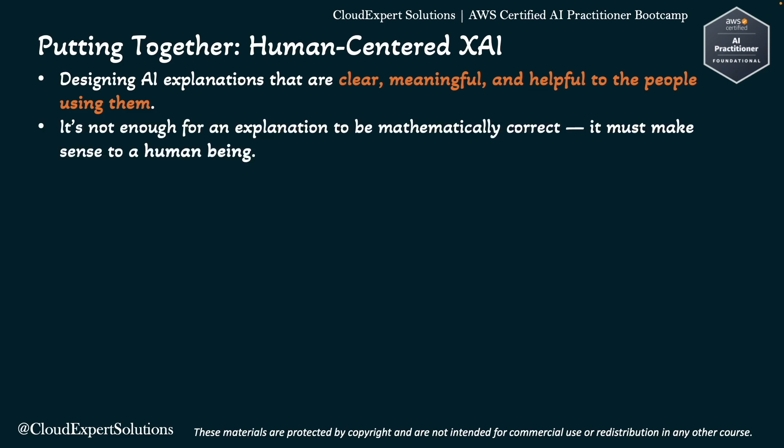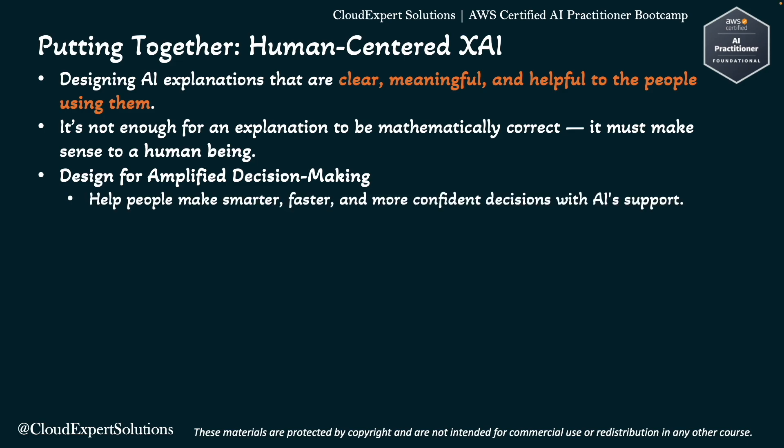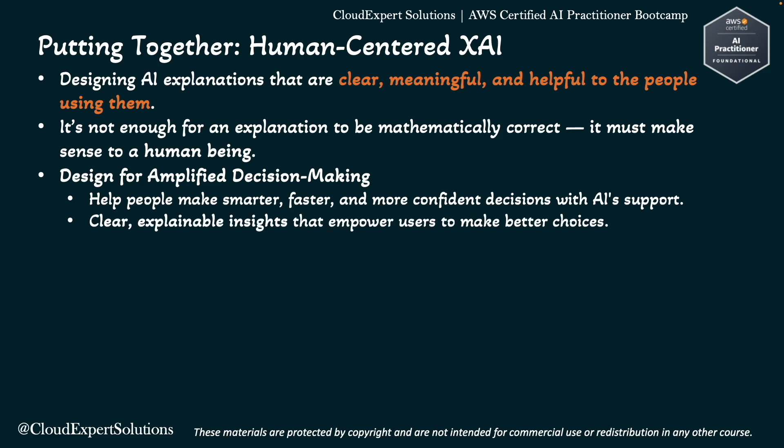It's not enough for an explanation to be mathematically correct — it must make sense to a human being. Human-Centered Design for Explainable AI comes with three key goals. The first is Design for Amplified Decision Making: it helps people make smarter, faster, and more confident decisions with AI support. AI should not replace human decision-making but enhance it, providing clear and explainable insights that empower users to make better choices.